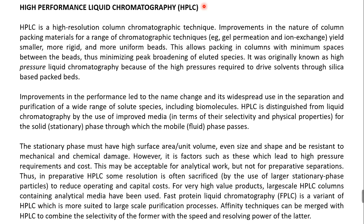You can use different columns based on your needs. For ion exchange chromatography in HPLC, you can use a DEAE column or CM cellulose (carboxymethyl cellulose). For gel filtration or gel permeation, you can use different types of Sephadex or Sepharose based on your protein's pore size. Affinity chromatography is also possible but used rarely; mainly ion exchange and gel filtration are used.